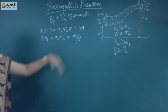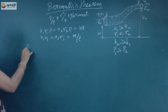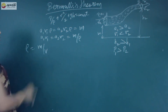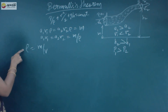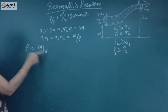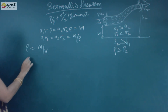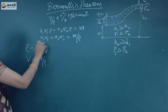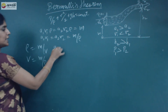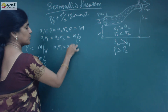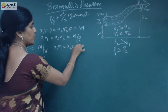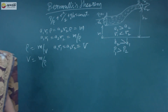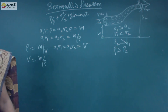Density is equal to mass by volume, so volume equals mass by density. Therefore, A1V1 equals A2V2 equals the volume of the liquid entering the tube.